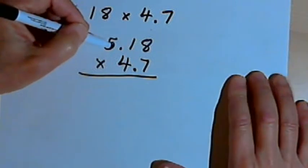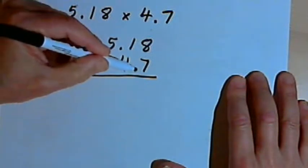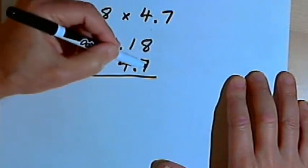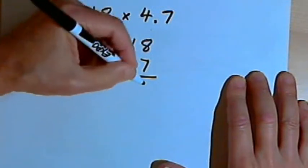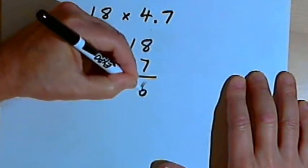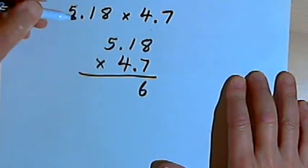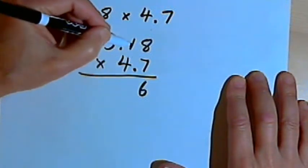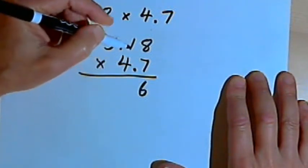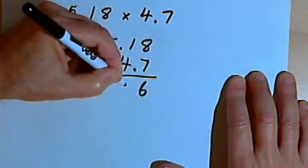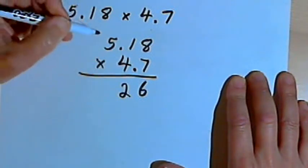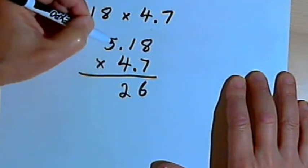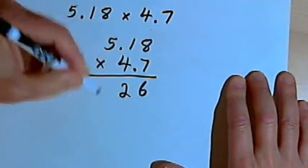Now we'll go ahead with my multiplication, not worrying about the decimal points. I've got to multiply 7 times 8, that's 56. I'll write the 6 and carry a 5. Then 7 times 1 is 7, plus the 5 I'm carrying is 12. So I'll write the 2 and carry a 1. And then 7 times 5 is 35, plus 1 more is 36.